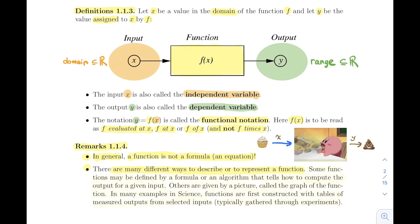As I just mentioned, some functions will be defined by a formula or an algorithm that will tell us explicitly how to compute the output for a given input. But others will just be given to us by a picture or the graph of the function. In some examples, especially in science, functions are first constructed with tables of measured outputs from selected inputs, typically through experimentation. But a function in general is just that thing that binds two variables together, x and y. If you have an equation, that's the best case scenario, but there's a lot of different types of functions that are not just defined by equations. For this section, that's it!